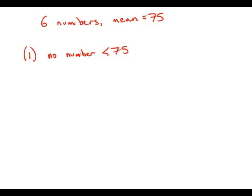You might naively think some of the numbers could be bigger than 75, but if the average is 75, then any number bigger than 75 would have to be balanced out by a number less than 75.